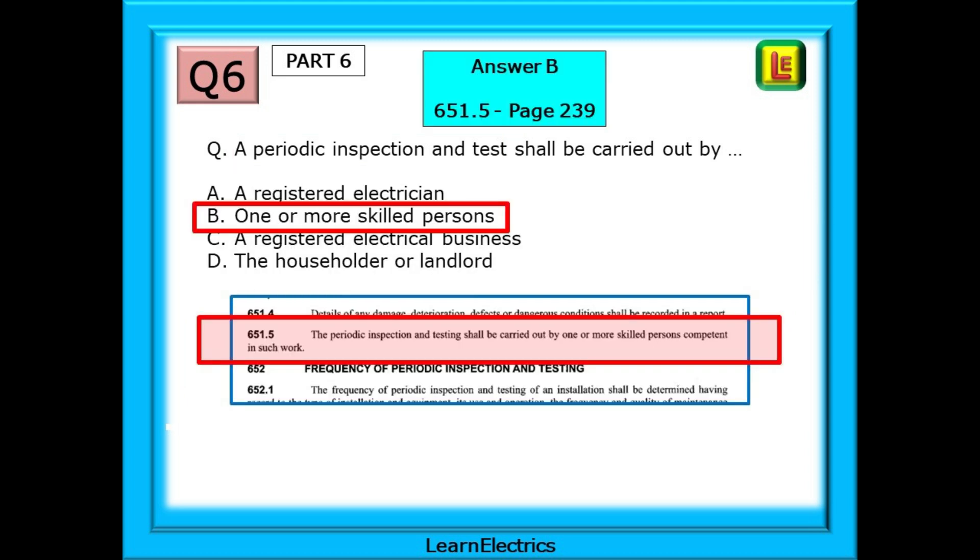On page 239 we find regulation 651.5 which states that the periodic inspection and test shall be carried out by one or more skilled persons etc. So choose answer B.